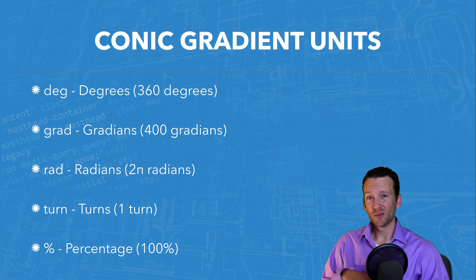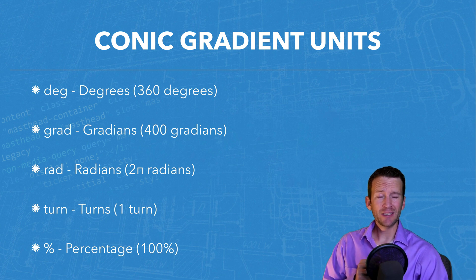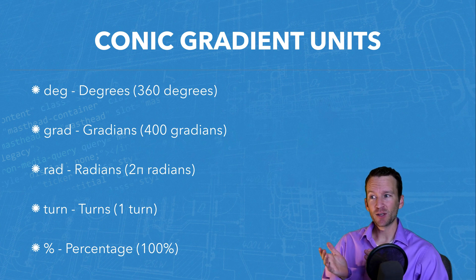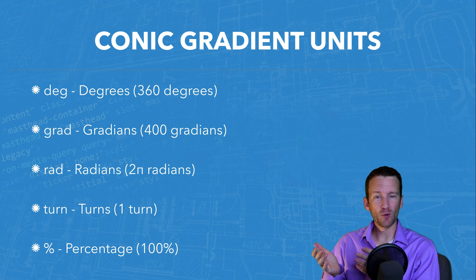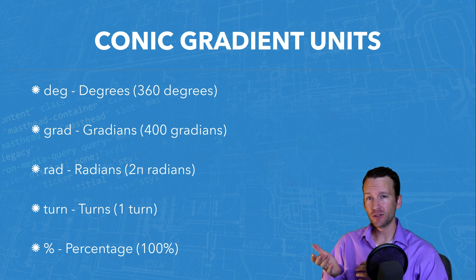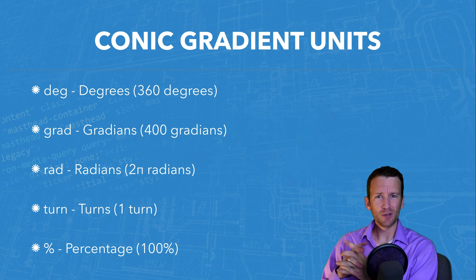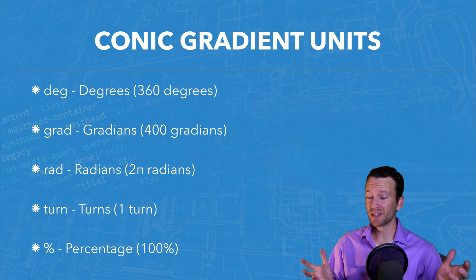Because conical gradients are angle-based, we use different CSS units. Degrees (deg) range from 0 to 360. Gradients use 0 to 400. Radians use 2π, and turns use 1 — so 0.5 turns is half a circle. Lastly, you can use percentages; they're not part of the original spec but all browsers implement them, so 25% or 30% works as expected.